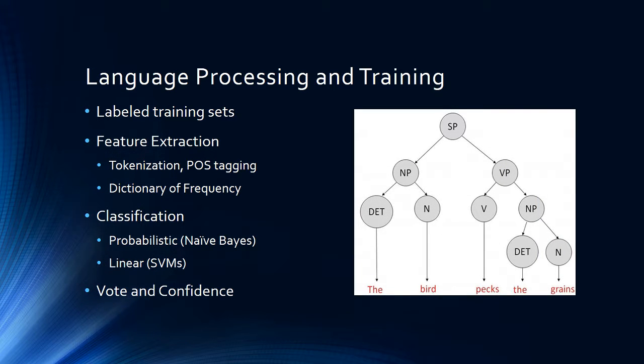However, the most important part of the project is language processing and training that data. So once we have those labeled training sets, we extract the features from that text. Now what does feature extraction mean? Basically we are breaking down the sentence and extracting the keywords that will help us decide whether a particular kind of word exists as a positive feature or as a negative feature.